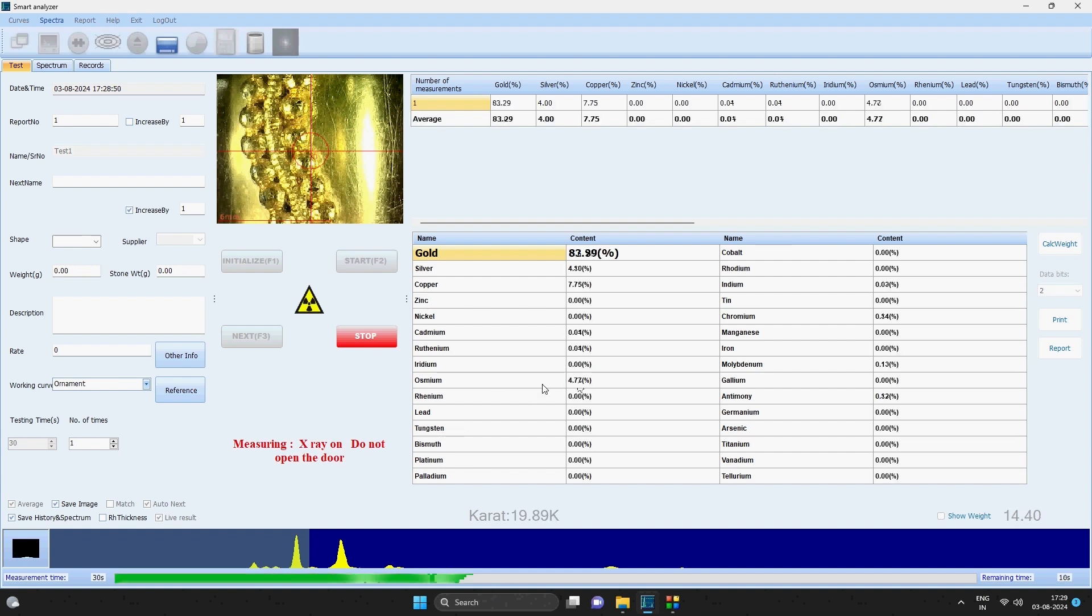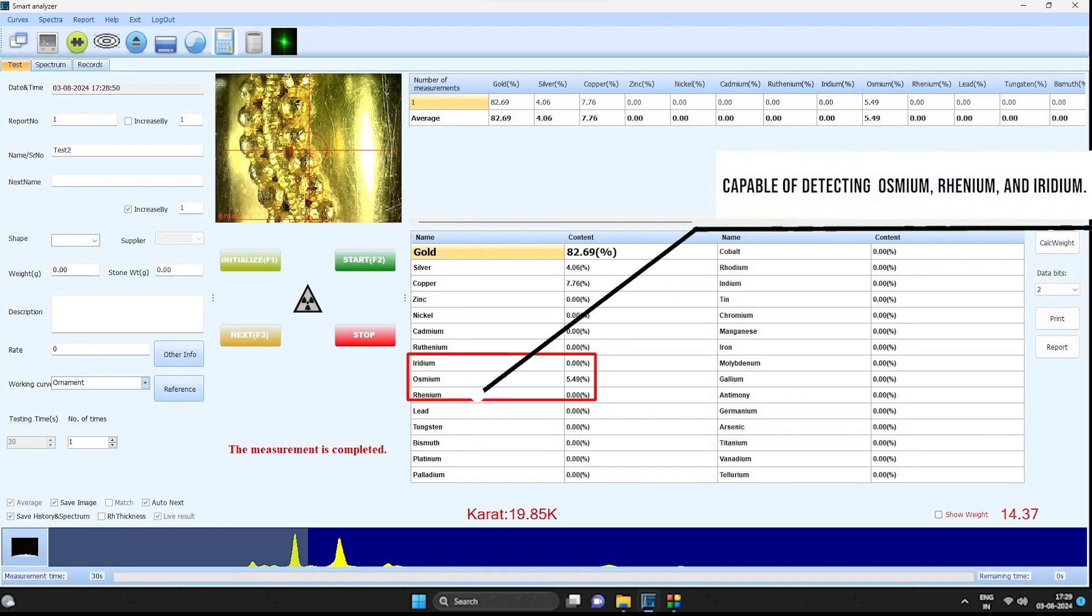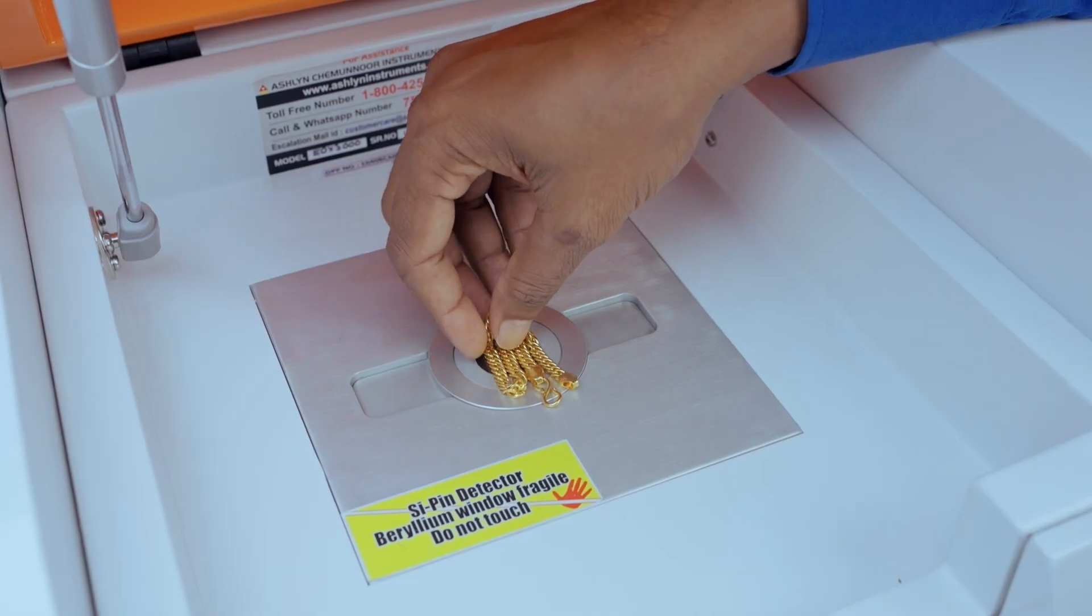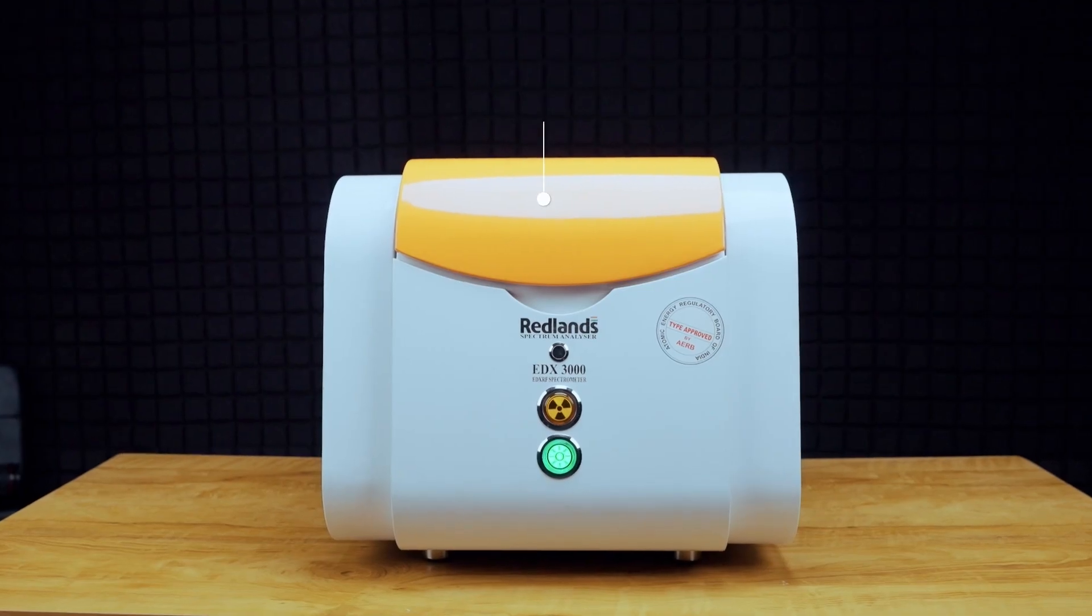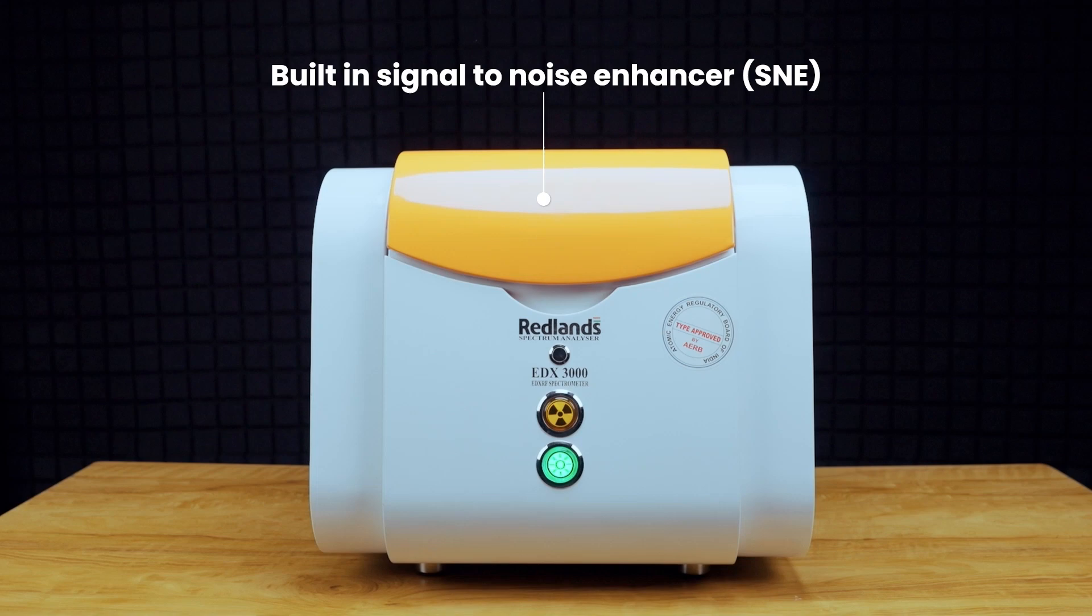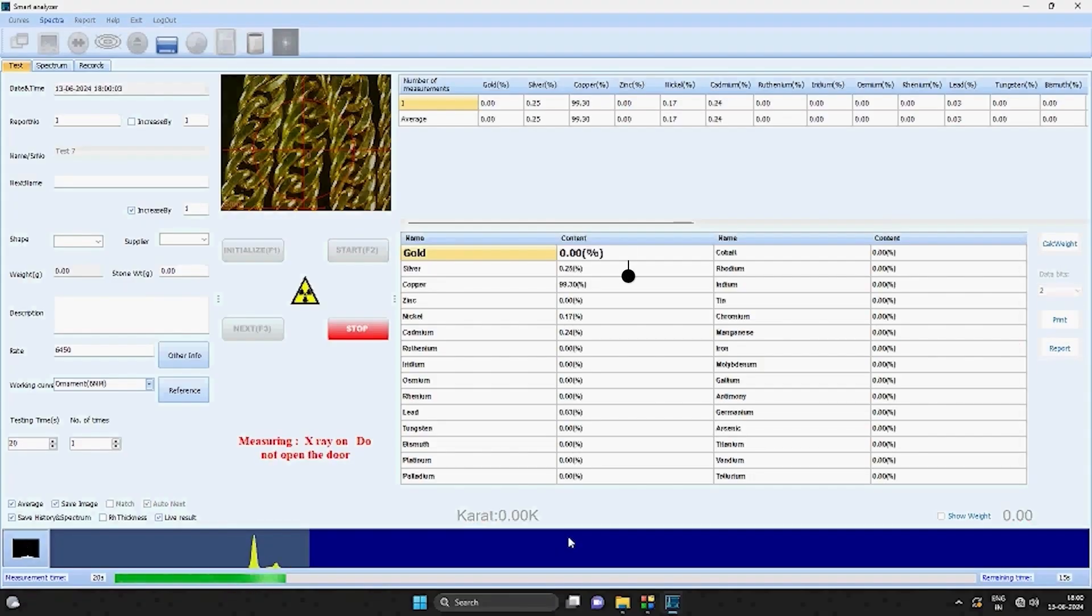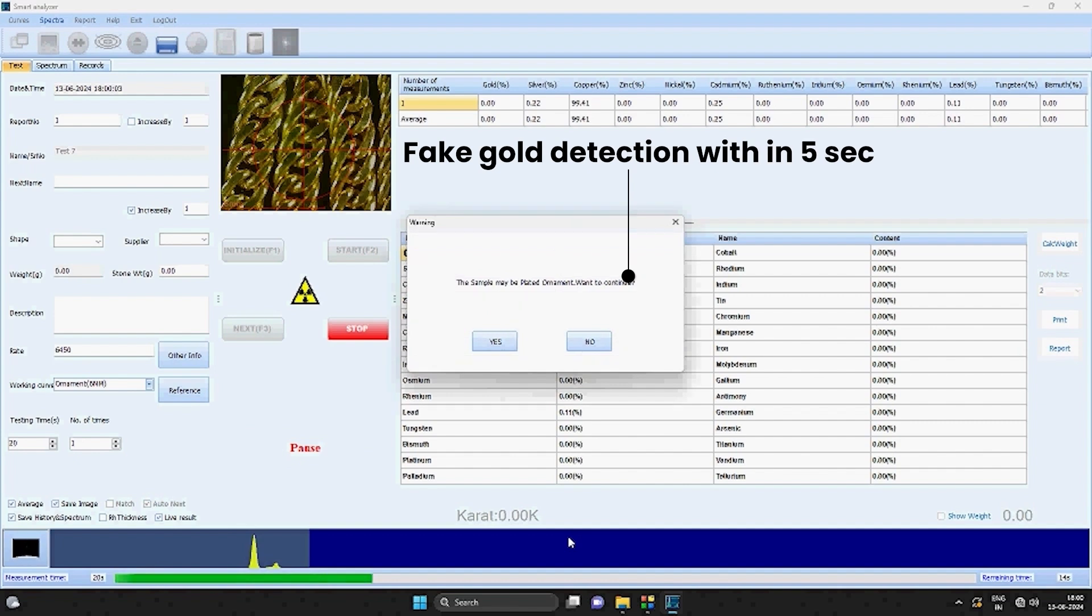The model features the most advanced detector with better resolution, achieving precise alloy identification. It is capable of detecting all banned platinum group metals in jewelry such as osmium, rhenium, and iridium. Redlands advanced software also features a warning alert within 5 seconds if it detects ornaments made of very low purity or spurious materials, prompting further verification or investigation.